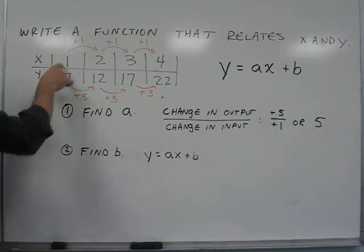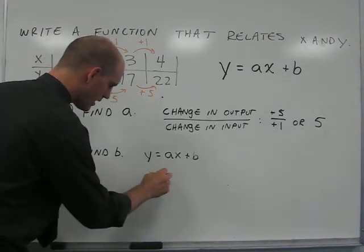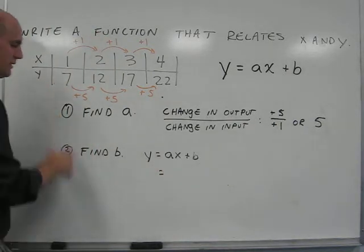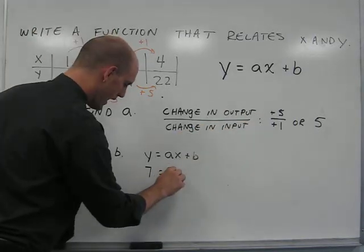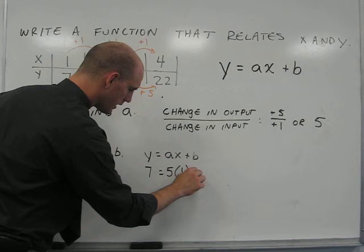We substitute in a value for x and a value for y. I'm going to use the point 1, 7. So, 7 is equal to a, or 5, times 1 plus b.